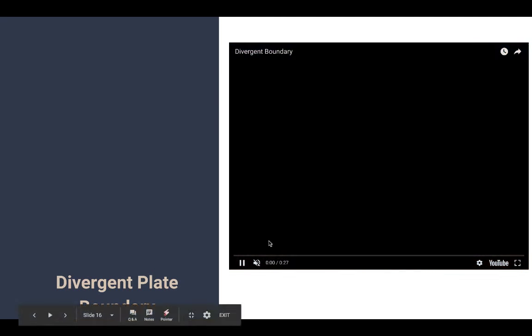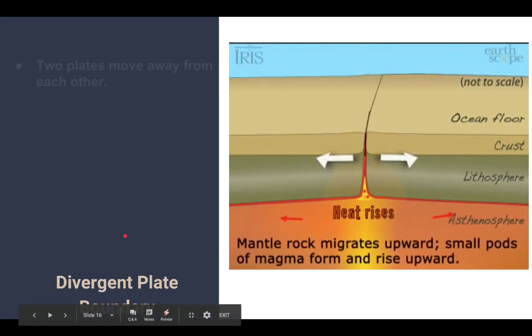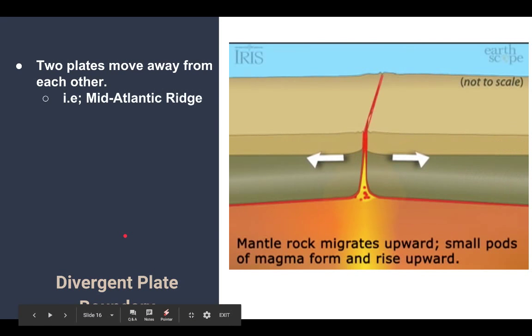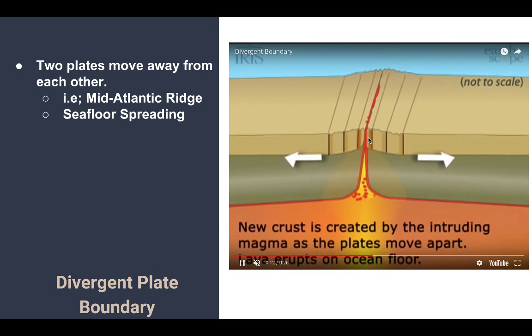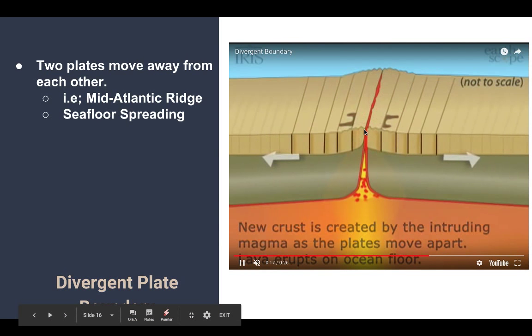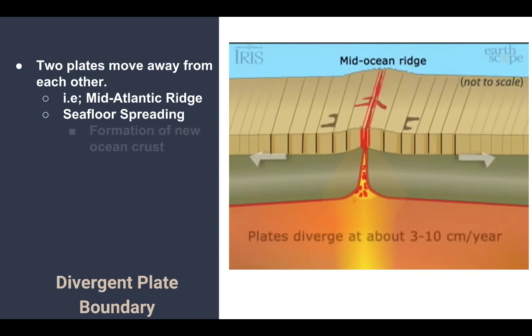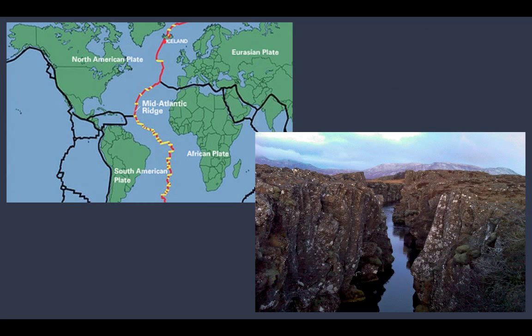Which leads us into our three types of plate interactions. First one is a divergent plate and it's self-explanatory. When things diverge, they separate. So what's happening here is two plates are moving away from each other. And as a result, you can see that magma is rising up to the surface. And as magma rises up to the surface, new ocean crust is formed. So we call this seafloor spreading. A perfect example is at the Mid-Atlantic Ridge.